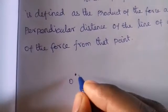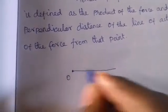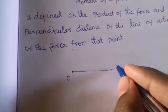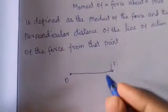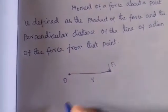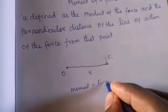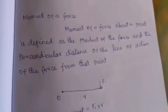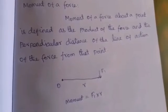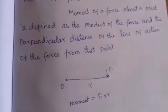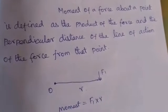Now, consider this point O, and this rod. There is a force F1 acting at a distance r from the point. The moment is equal to F1 into r — that is, force into distance. So the moment of a force about a point is the product of force and the perpendicular distance of the line of action of the force from that point.